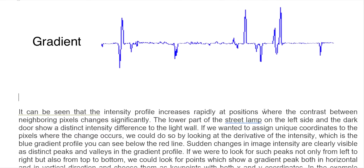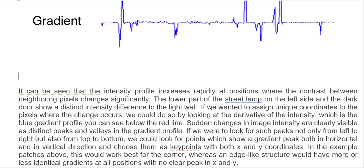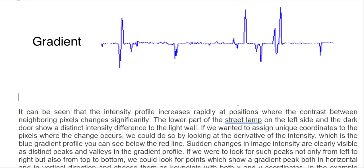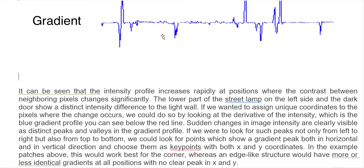It can be seen that the intensity profile increases rapidly at positions where contrast between neighboring pixels is significant. If we want to assign a unique coordinate to the pixel where the change occurs, we can do so by looking at the derivative of the intensity — the blue gradient of the profile. The sudden changes in image intensities are very clearly visible as distinct peaks and valleys in the gradient profile. This change may happen in the vertical, horizontal, or both directions.